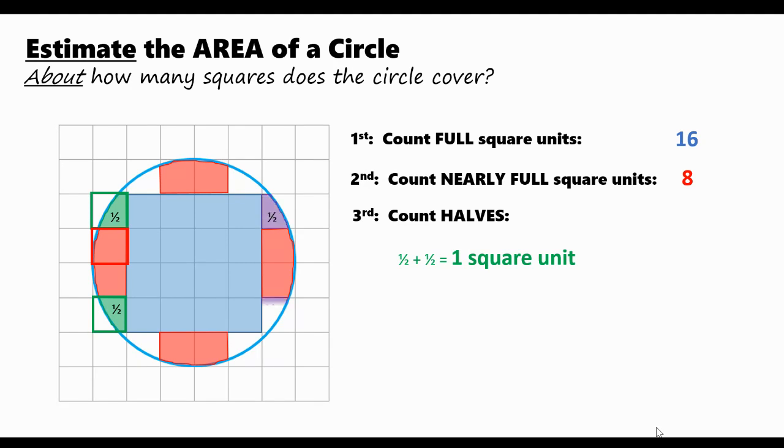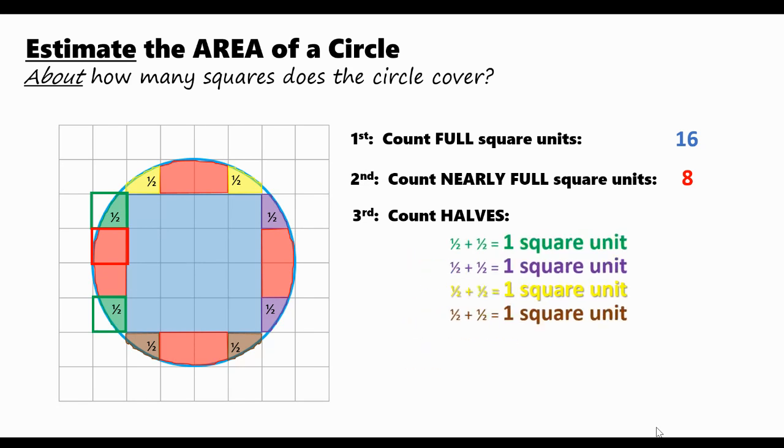Here's another area of the circle where we can do this. One half plus one half equals one whole. And again, and one more time. Putting all of these halves together, you can see that we have about four square units.